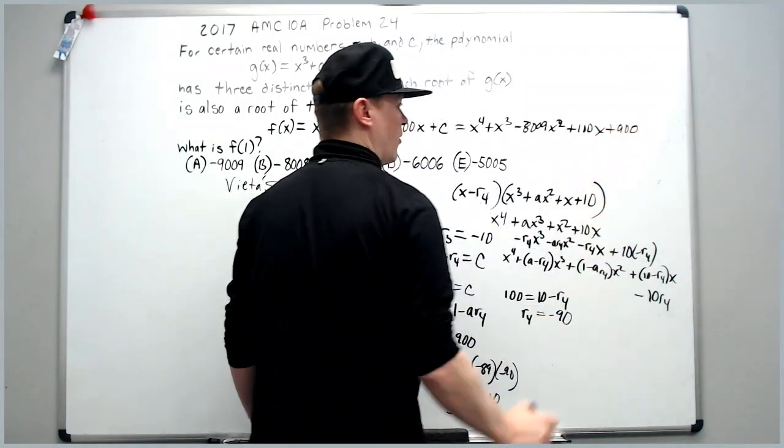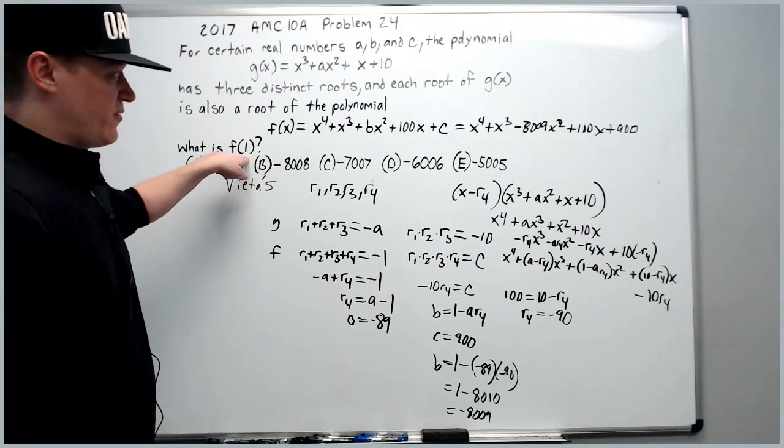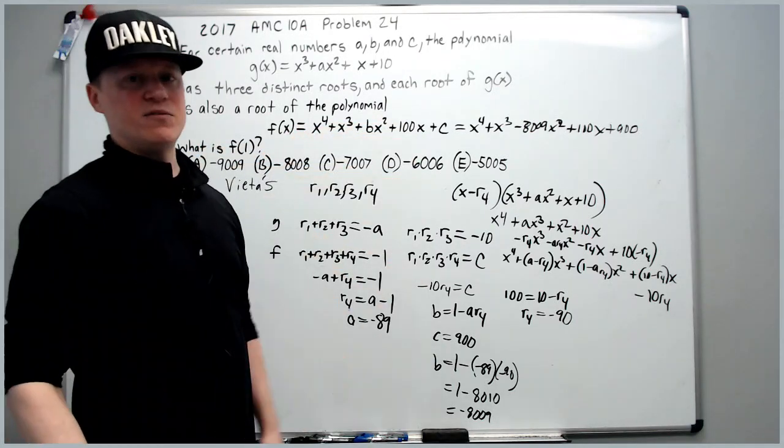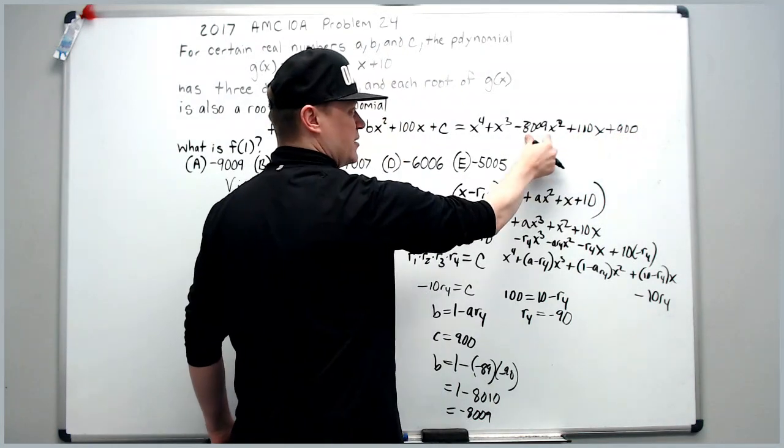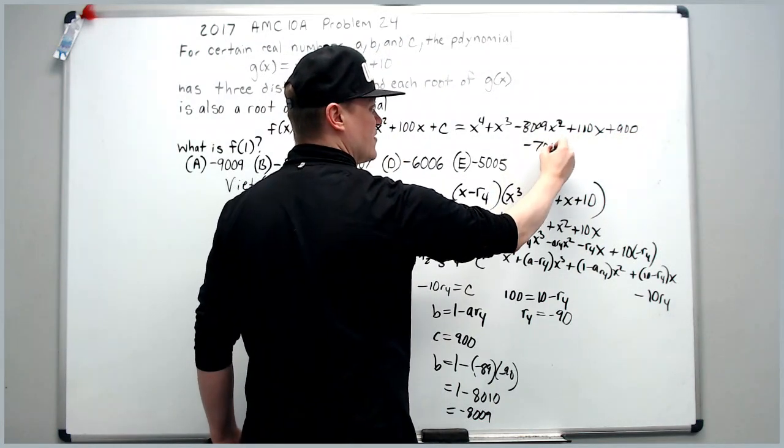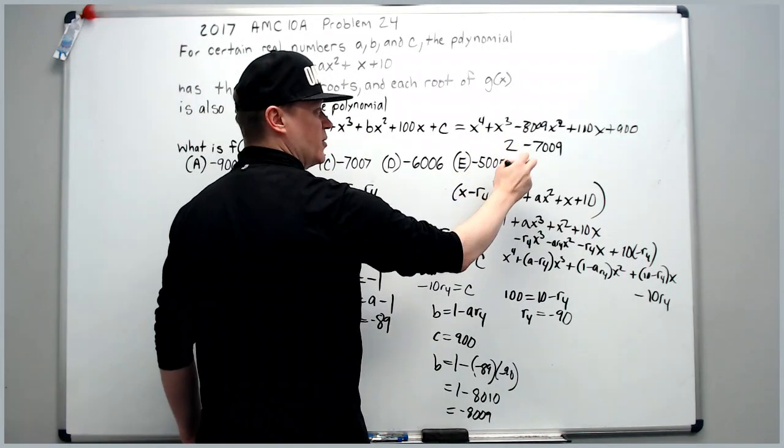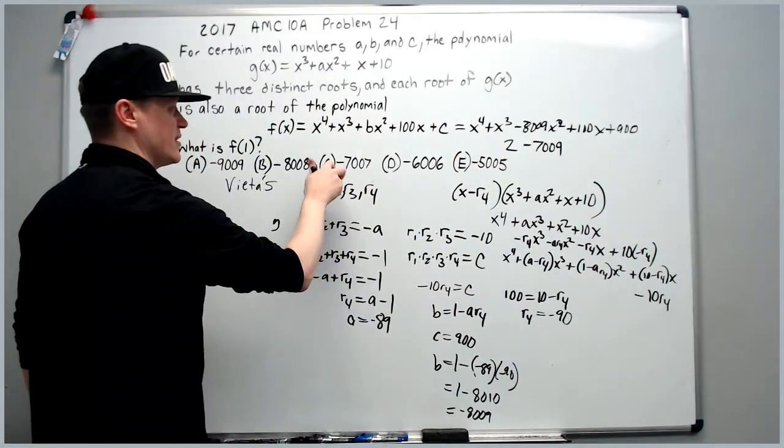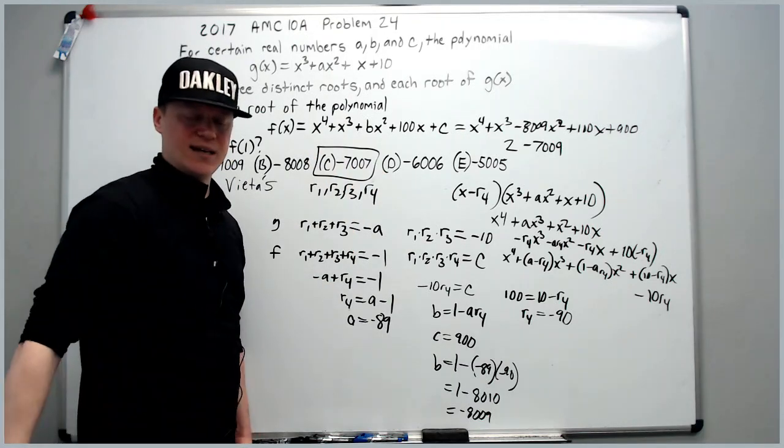We are now ready to answer the question, what is f of 1? f of 1 for all functions is going to be the sum of the coefficients. Here we have 100 and 900. That's a thousand. We combine it to get negative 7009. We add the two coefficients here, which is 2. That gives us answer choice c, negative 7007.